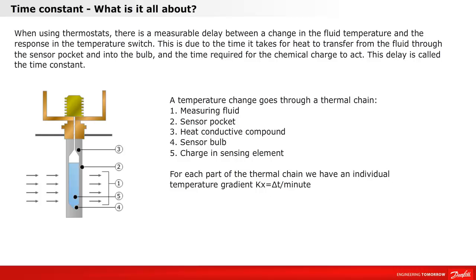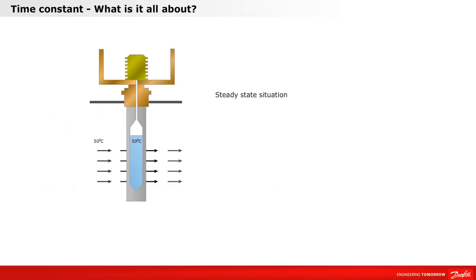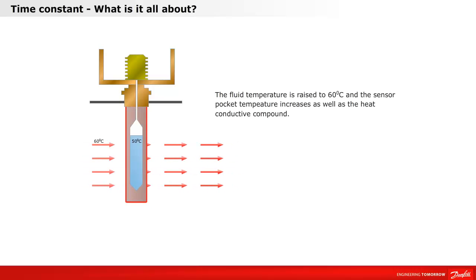When using thermostats, there is a measurable delay between a change in fluid temperature and the response in the temperature switch. This is due to the time it takes for heat to transfer from the fluid through the sensor pocket and into the bulb, and the time required for the chemical charge to act. This delay is called the time constant.